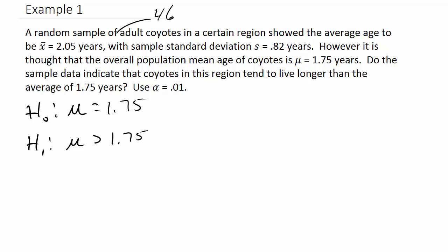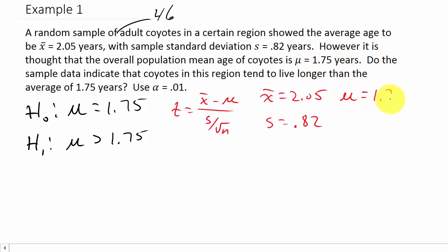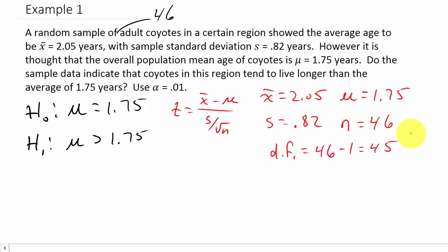We need our test statistic: t equals x-bar minus mu, over s divided by the square root of n. In this problem x-bar is 2.05, s is 0.82, mu is 1.75, and n is 46. The degrees of freedom is n minus one, which is 46 minus 1, giving us 45.